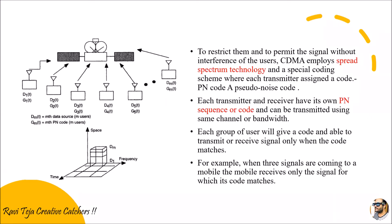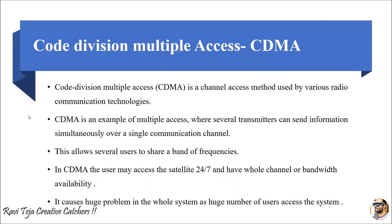The major advantage of using codes is that we can use a single channel for many users. CDMA — Code Division Multiple Access — gives multiple access to several transmitters to send information simultaneously using a single channel. Through a single channel, transmission and reception of signals for many users can be done, with 24/7 access and full channel and bandwidth availability.